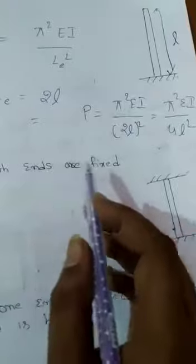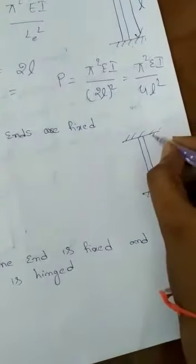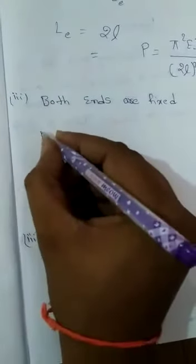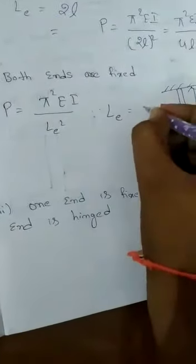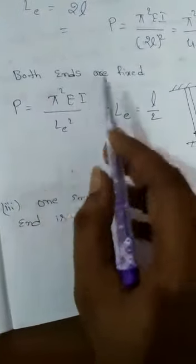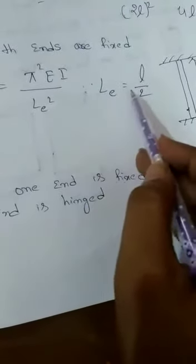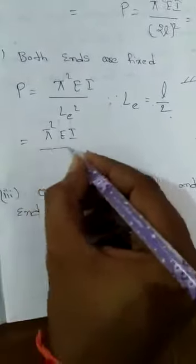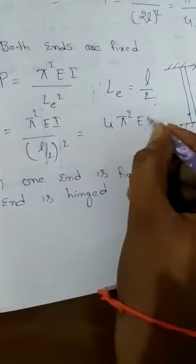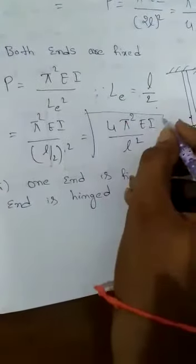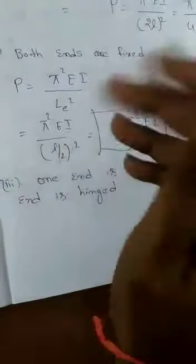Third condition: both ends are fixed. This is the most common case in civil engineering — every column typically has both ends fixed. In this condition the effective length LE = L/2, i.e., half the length of the column. Substituting into the crippling load formula: P = π²EI / (L/2)² = 4π²EI / L². This formula is used when both ends of the column are fixed.